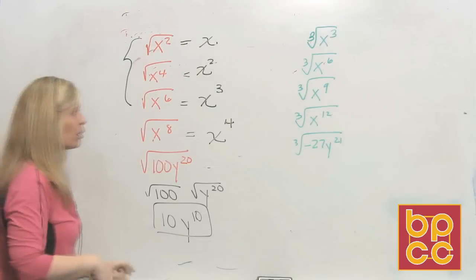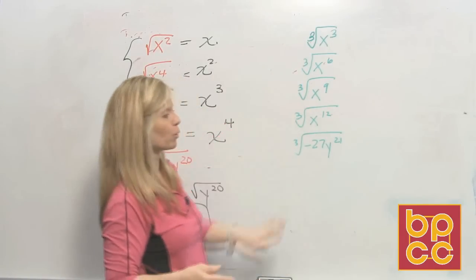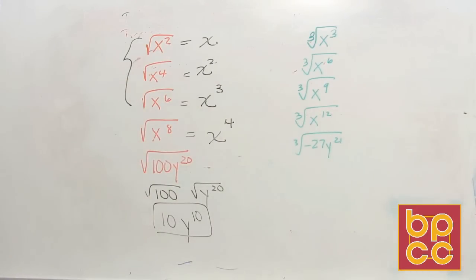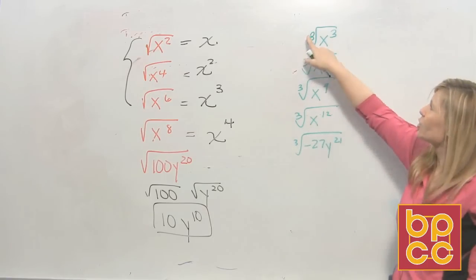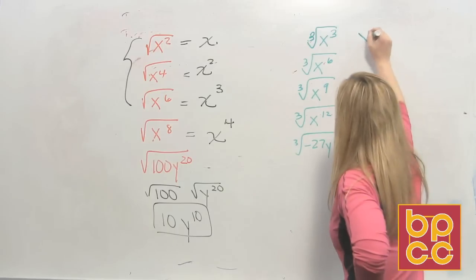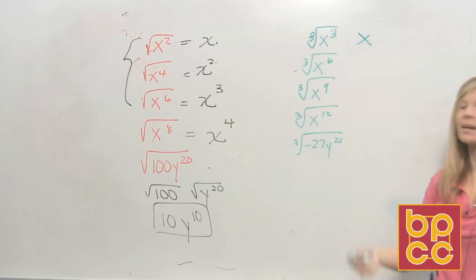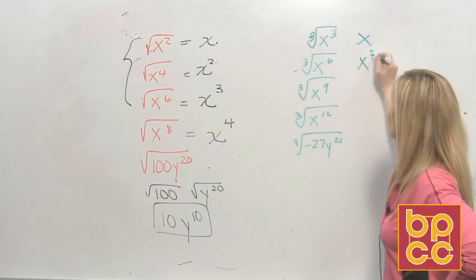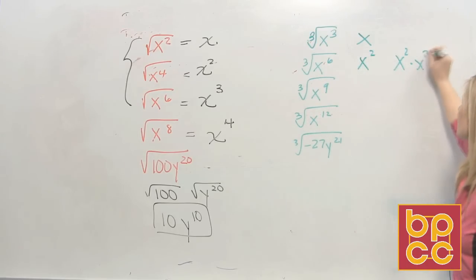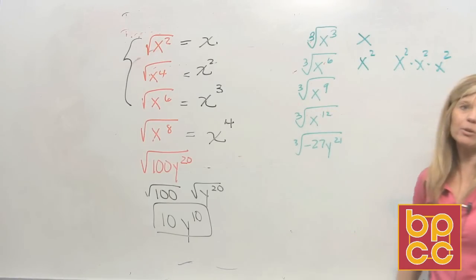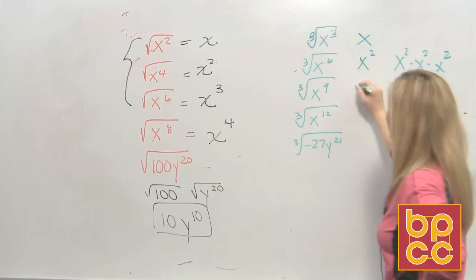Now we're going to do cube roots. Cube roots mean to multiply something the same way three times. When I ask you the cube root of x cubed, I'm asking what letter did you multiply three times to give you x cubed? That's x — x times x times x is x cubed. What letter did you multiply three times to give you x to the sixth? That's x squared: x squared times x squared times x squared gives you 2, 4, 6. What variable did you multiply three times to give you x to the ninth? That's x cubed.